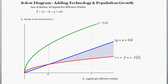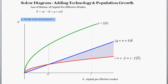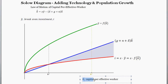So let's get to the diagram. On the vertical axis we have y-hat — unlike previous diagrams where we had output per worker, we're now talking about output per effective worker. Also graphed on the vertical axis are break-even investment and investment. Along the horizontal axis, for all of these things, we're talking about capital per effective worker, k-hat. A low level of capital per effective worker is on the left, a high level is on the right.